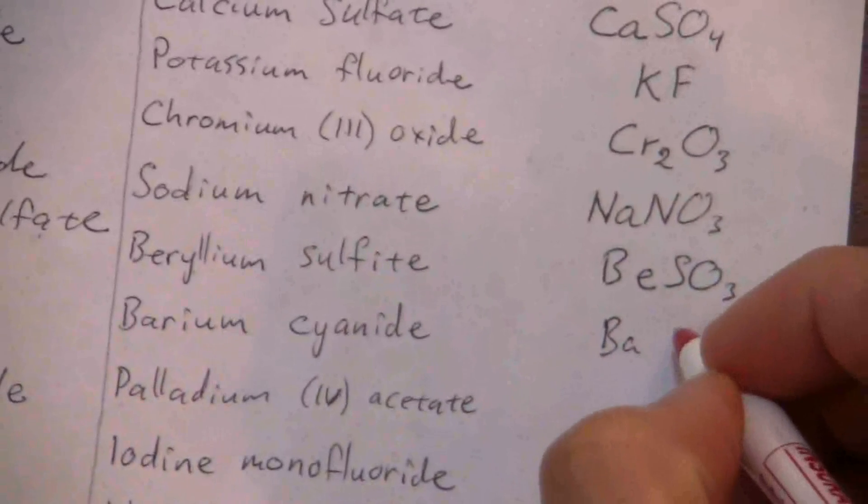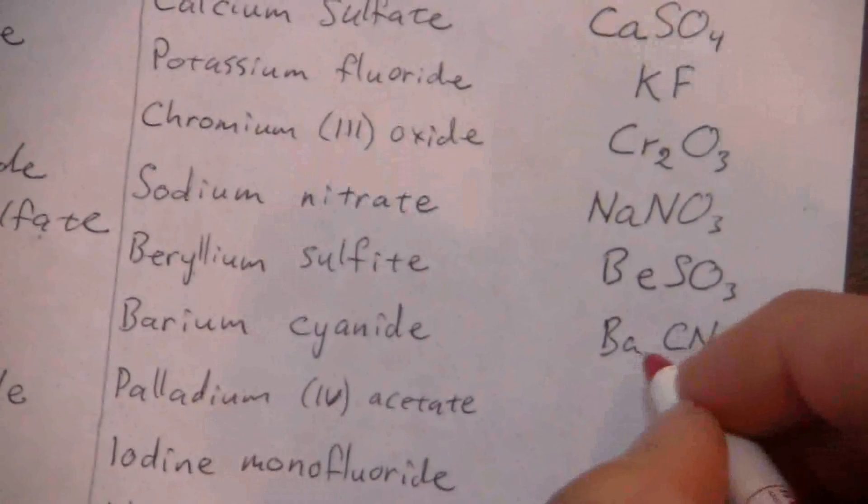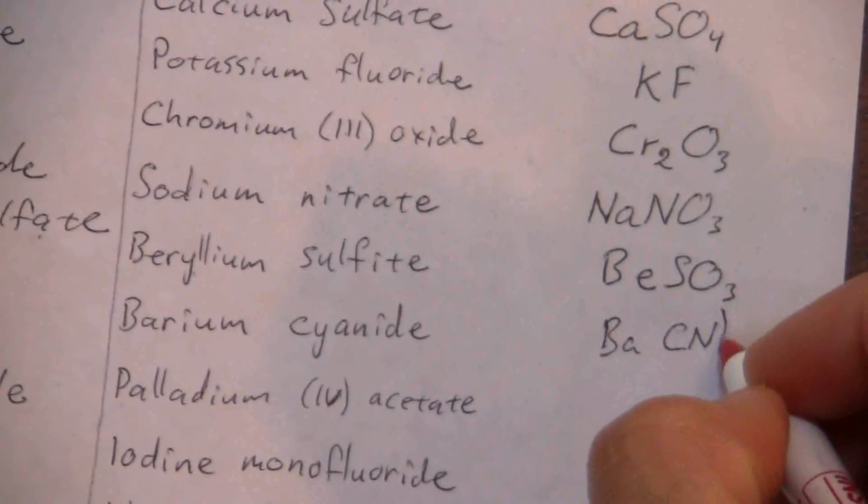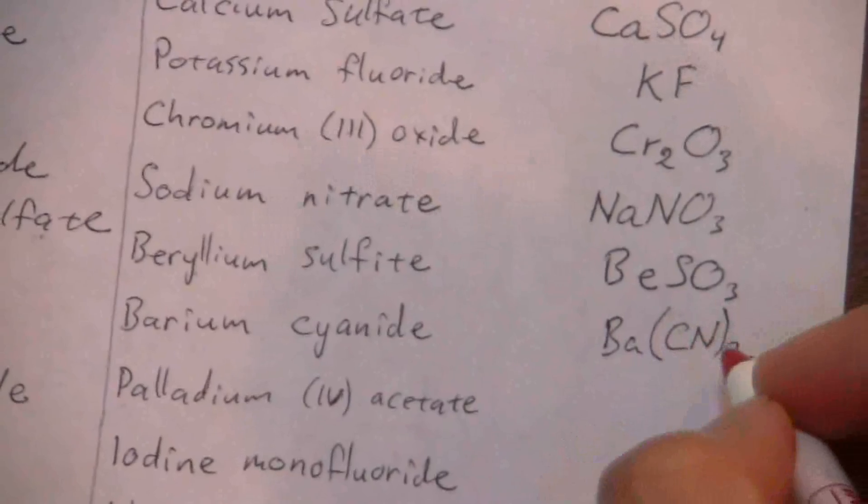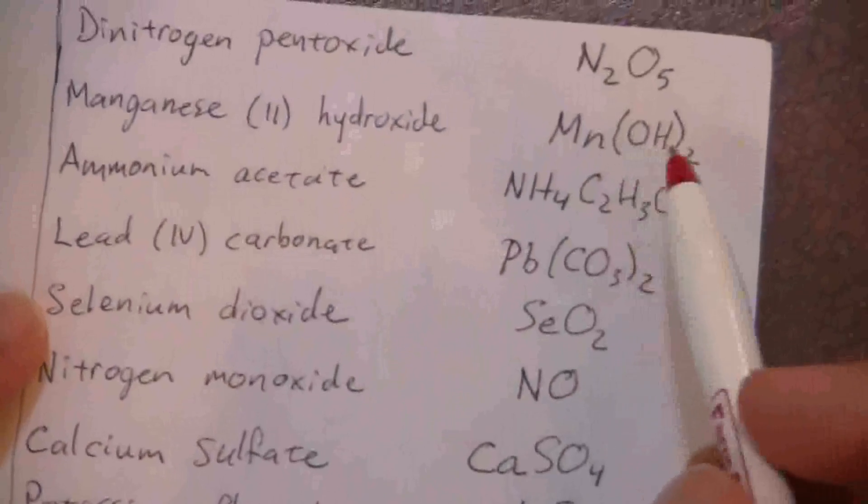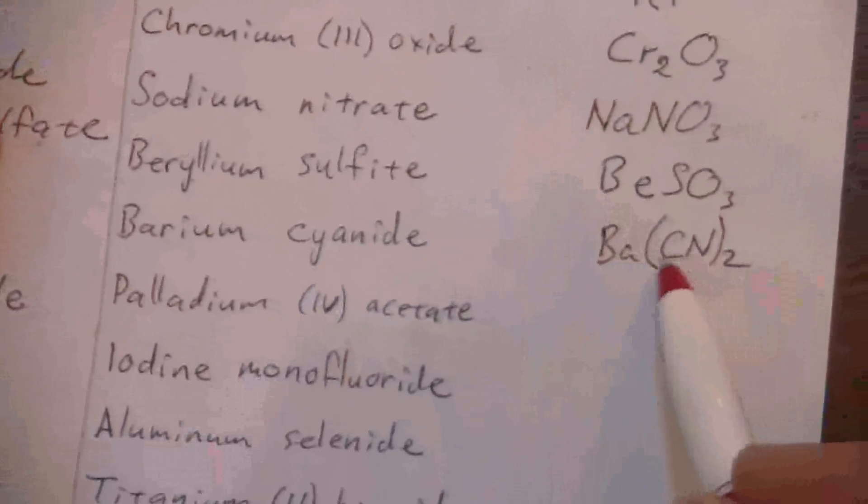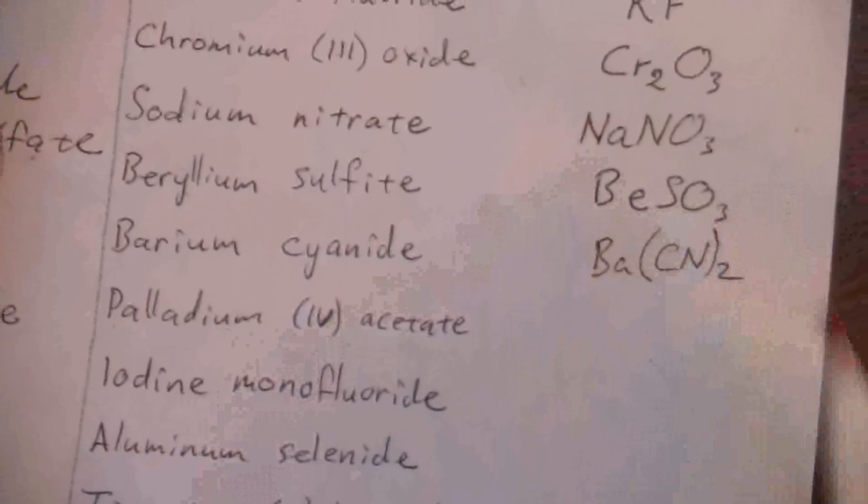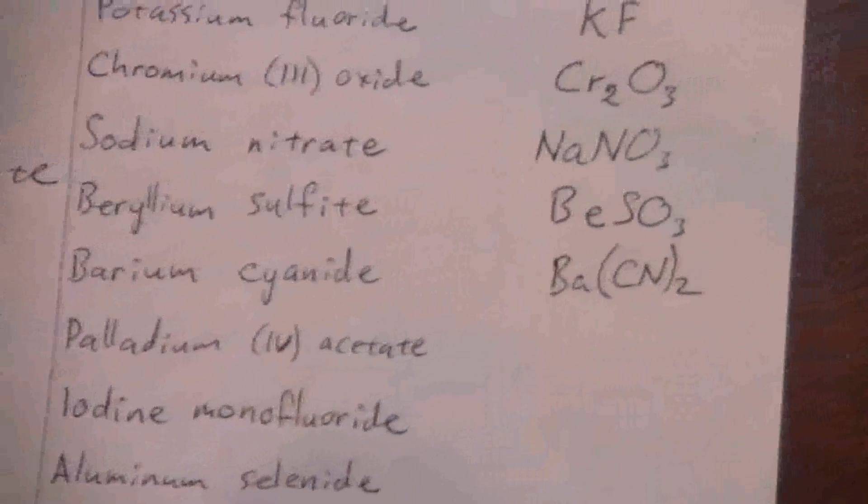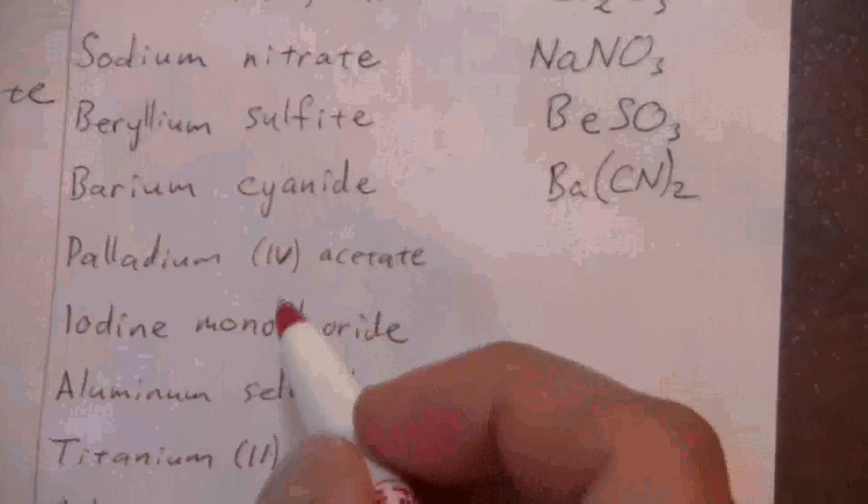Don't fall into the trap of writing it without parentheses. Sometimes with these ones like cyanide and hydroxide, where there's not a number there to remind you to put the parentheses, you have to be aware of that and don't forget it. So that's Ba(CN)2, barium cyanide.